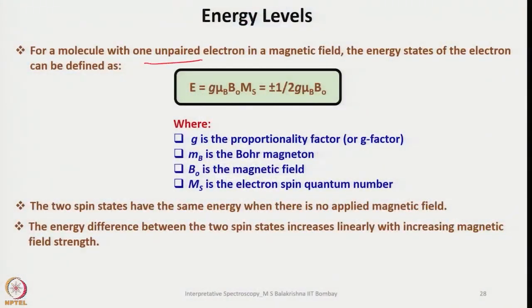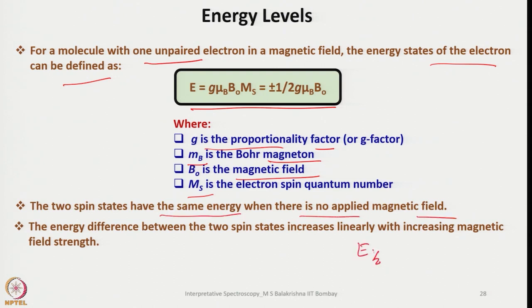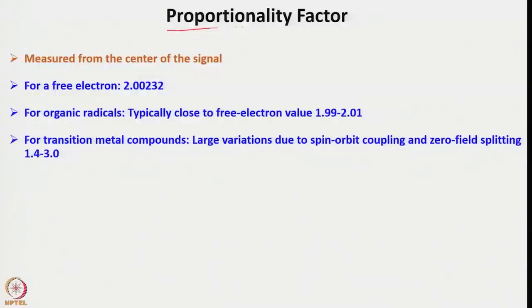For a molecule with one unpaired electron in a magnetic field, the energy states of the electron are defined as E = G·μB·B₀·Ms, which equals ±½·G·μB·B₀. Here G is the proportionality factor called the G factor, μB is the Bohr magneton, B₀ is the applied magnetic field, and Ms is the electron spin quantum number. The two spin states have the same energy when there is no applied magnetic field (E = 0), and the energy difference between the two spin states increases linearly with increasing magnetic field strength.